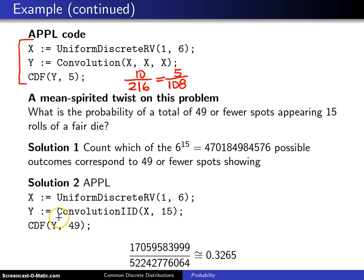Notice this time that there is a routine called ConvolutionIID(X, 15). That particular function will determine the distribution of adding up 15 random variables, each of which has the distribution of X. The IID here stands for independent and identically distributed.